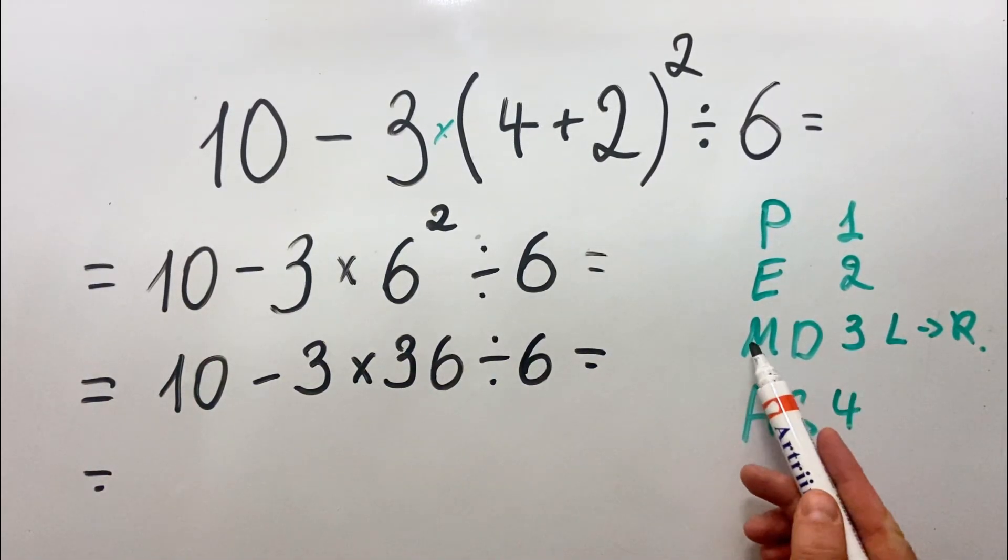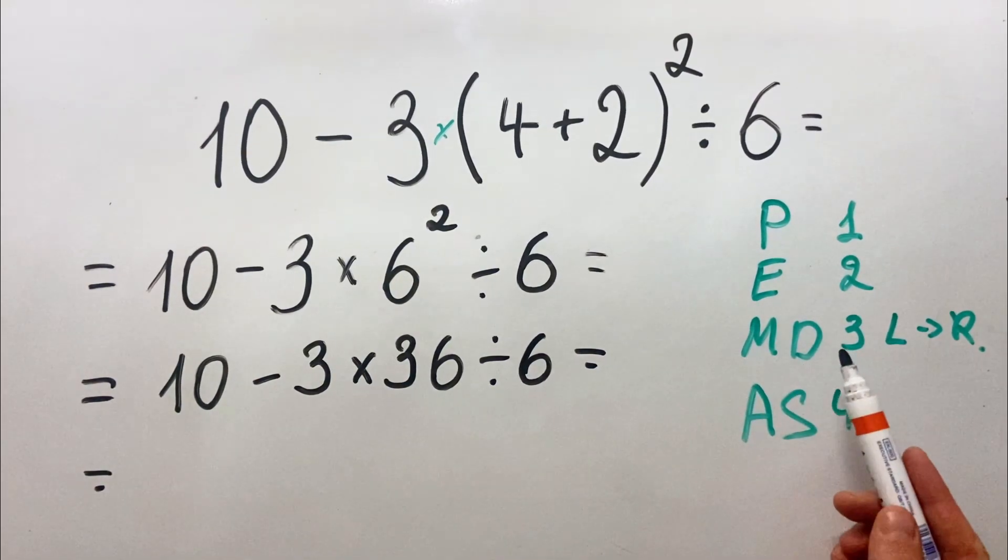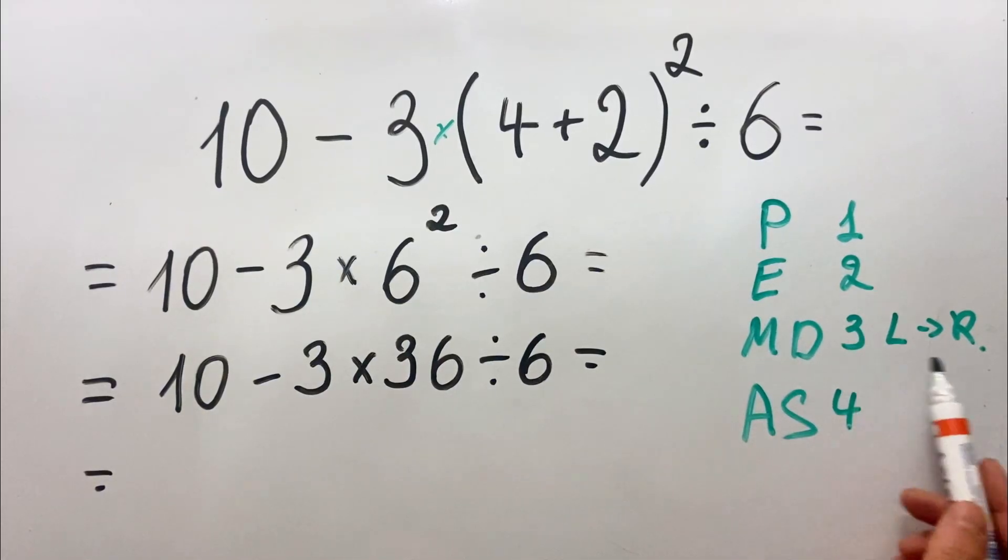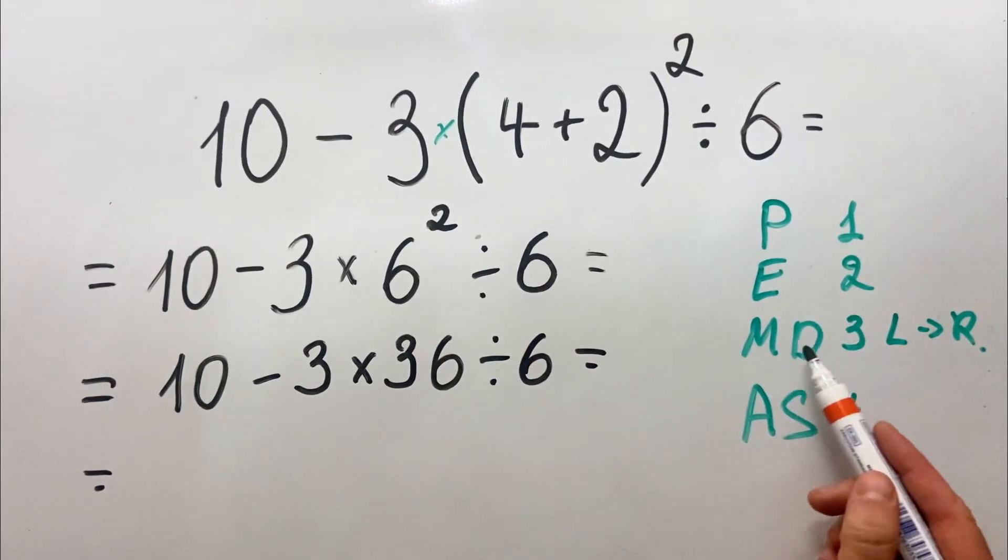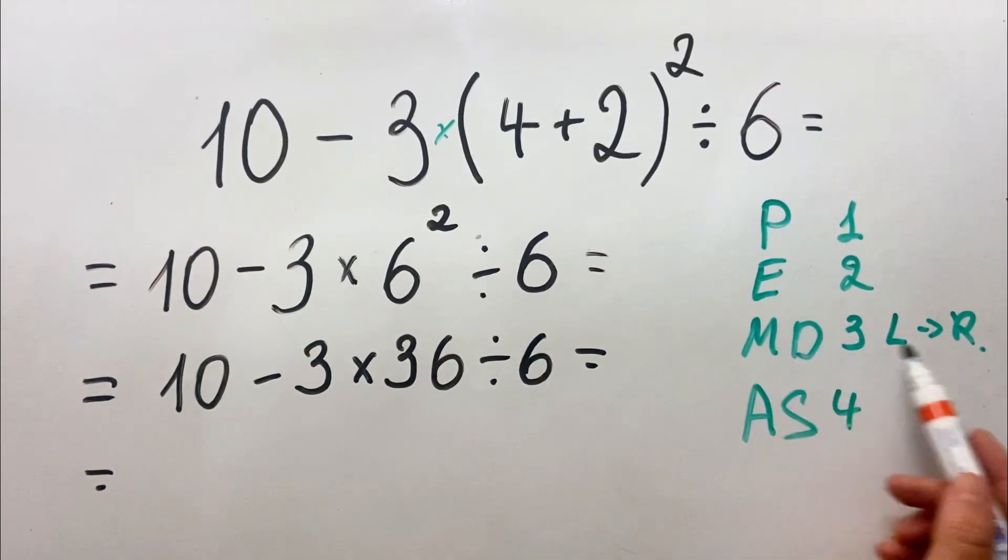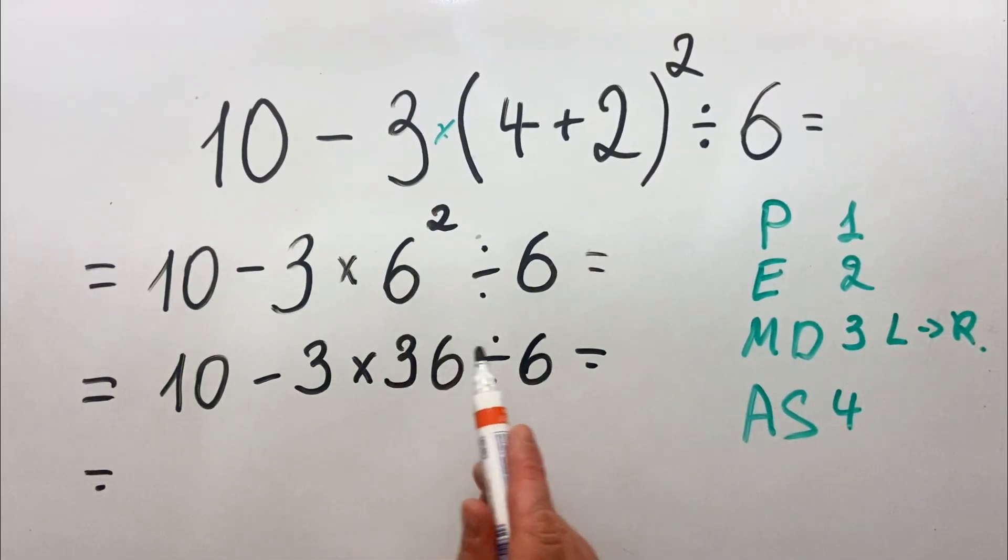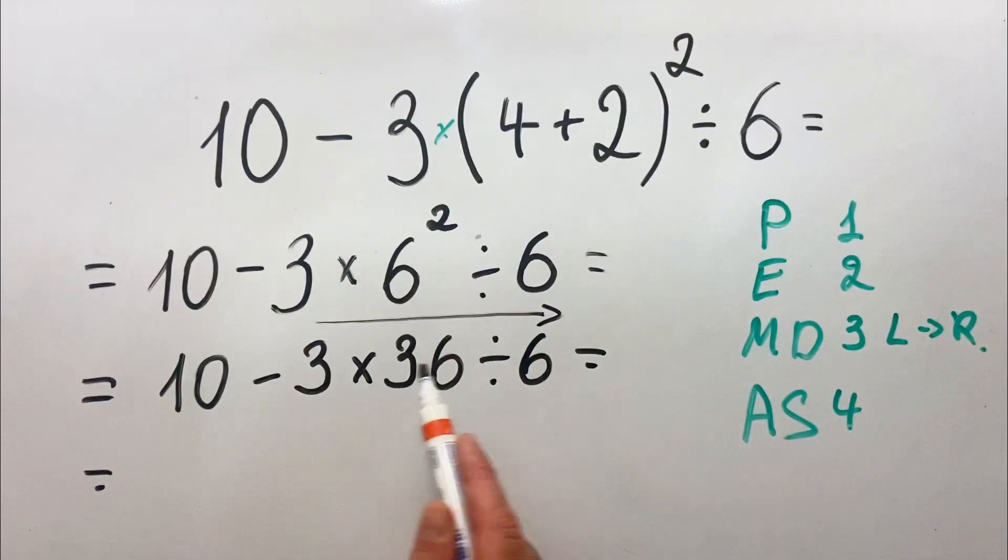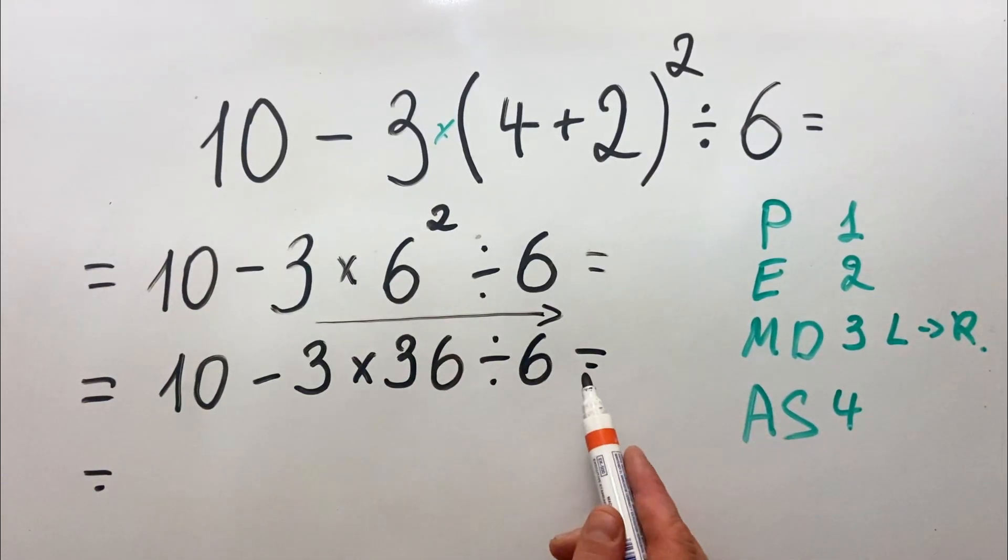Now we are at the level where we have multiplication, division, and subtraction. As mentioned, we will do multiplication and division from left to right. We have multiplication here and division here, so we will do it from left to right.